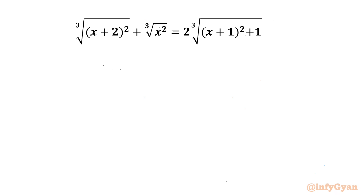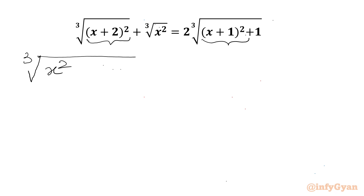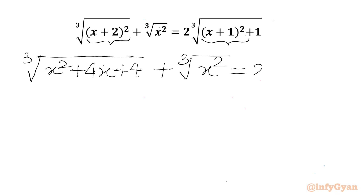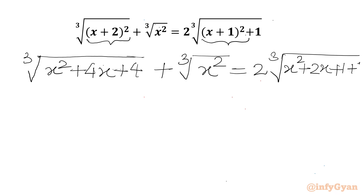Let's get started by writing our equation. We use the (a+b)² formula here, so we will get cube root of x² + 4x + 4. Here I will be writing cube root of x² equal to 2 times cube root of x² + 2x + 1, and then we have plus 1.